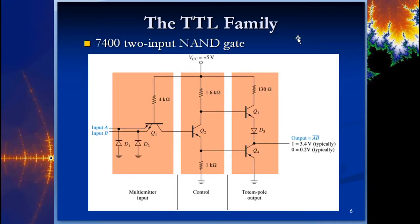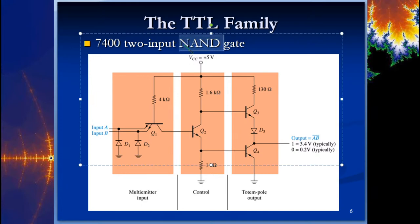Here's what's going on inside the box — inside a 7400 TTL chip. The 7400 is a two-input NAND gate: both inputs have to be high for the output to be high, then we negate that output. We've got two inputs, a couple of diodes on the inputs, and then one, two, three, four transistors and a couple of resistors. That's all that comprises a gate.